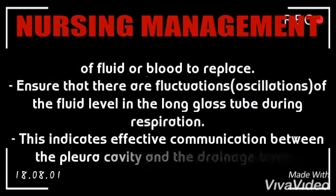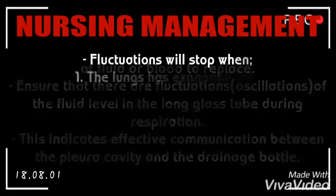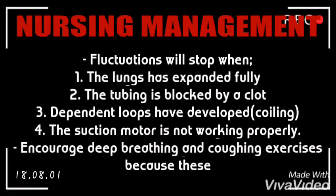Ensure that there are fluctuations or oscillations of the fluid level in the long glass tube during respirations. This indicates effective communication between the pleural cavity and the drainage bottle. Fluctuations will stop when the lungs have expanded fully, the tubing is blocked by fibrin or a clot, dependent loops have developed or coiling has occurred, or the suction motor is not working properly.